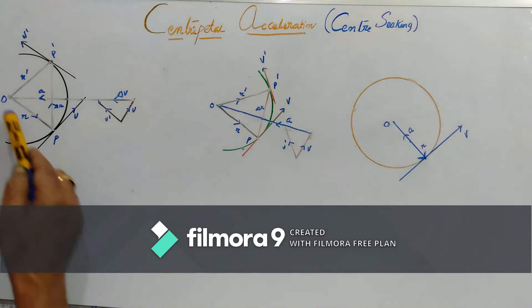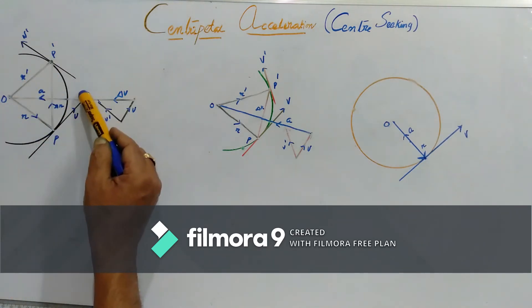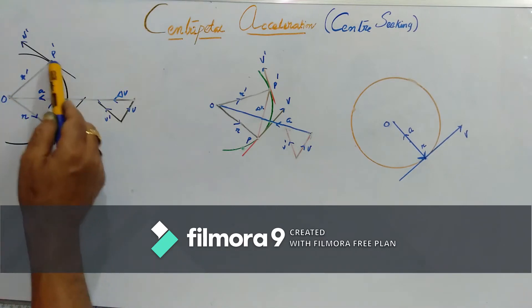So here this R is position vector at P, R' is the position vector at P'. V is the velocity vector at P and V' is the velocity vector at P'.